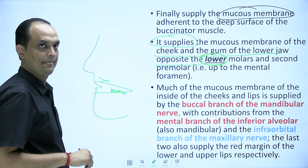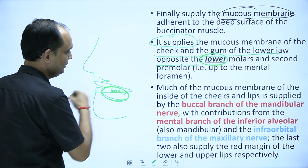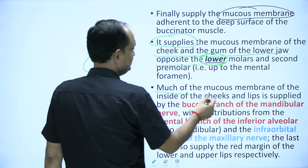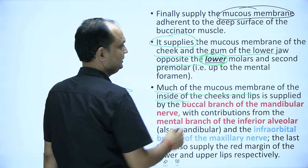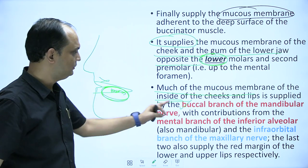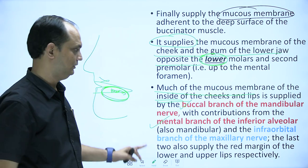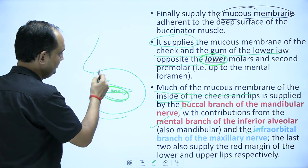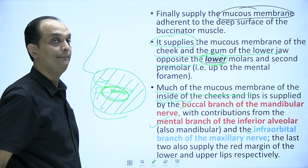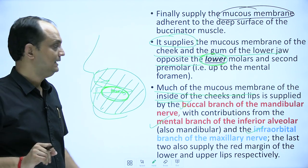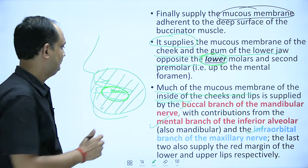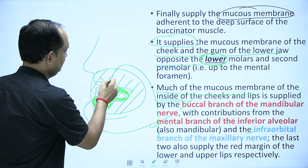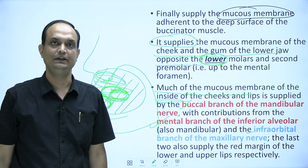The buccal nerve supplies the mucosa of the cheek and the gum of the lower jaw opposite the lower molars and second premolar, up to the mental foramen. The complete mucosal sensory supply of the oral cavity is provided by three nerves: the buccal branch of the mandibular nerve, the mental branch of the inferior alveolar nerve, and the infraorbital branch of the maxillary nerve.